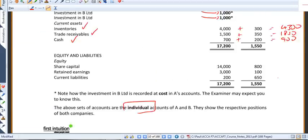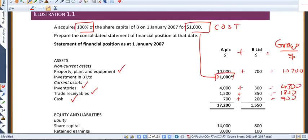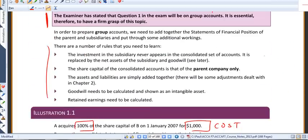Now, one thing that doesn't get added in is this investment. This investment always becomes nil in the group accounts. And that was the first of the golden rules that were outlined above this illustration.